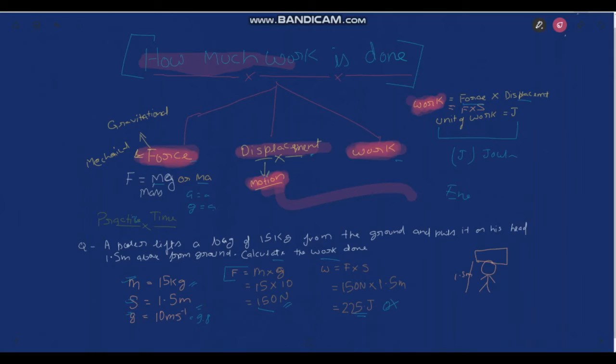For work, we have a formula: work is equal to force into displacement. F into S is equal to work and the unit of work is Joule. It is denoted by capital J Joule.